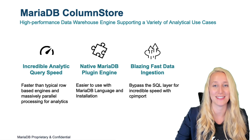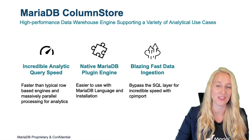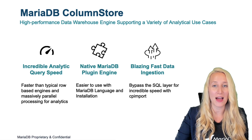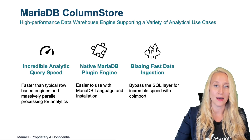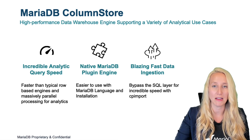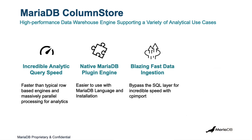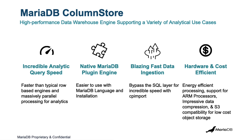ColumnStore also has blazing fast data ingestion speeds. Most customers report it's faster than anything else they've tried on the market. With cpimport, you're able to bypass the SQL layer and go straight to the data files, which removes all that overhead and lets you import data as fast as possible. Another unique feature is that it's very hardware and cost efficient. It has support for ARM processors, impressive data compression rates, and also has the ability to put your data files in S3 as opposed to standard disk storage — a really low cost option when you're getting into terabytes and petabytes of data.